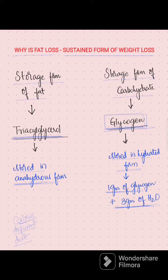When a person is on a calorie-deficient diet, the storage form of carbohydrate is depleted first, along with the loss of water, which is reflected on the weighing scale as rapid weight loss. And that weight can be gained back as soon as the person starts eating carbohydrates, because carbohydrates get stored along with water.